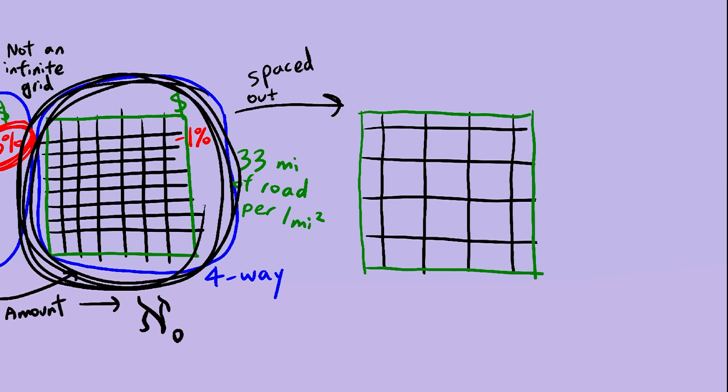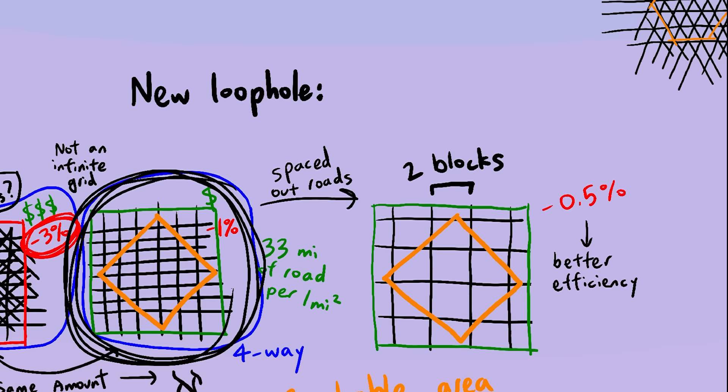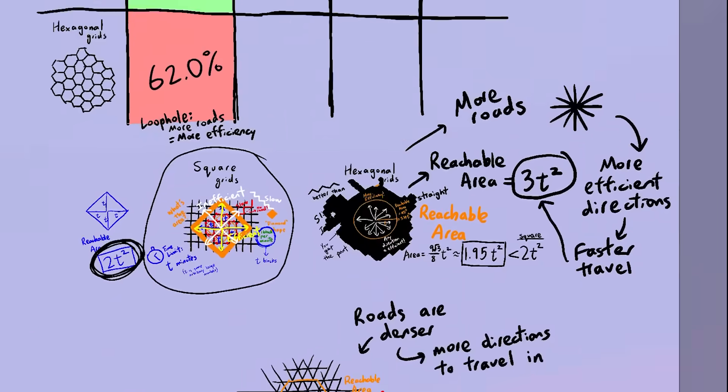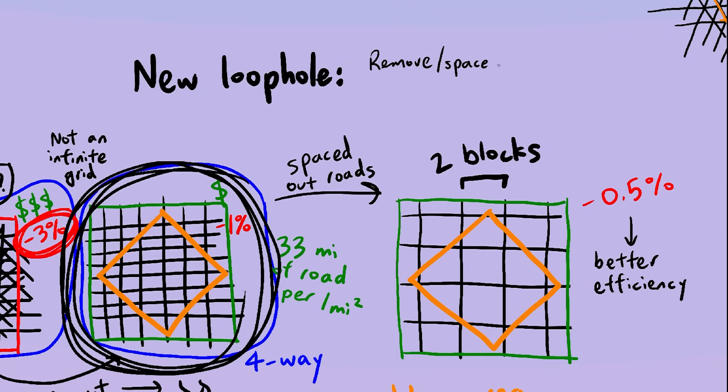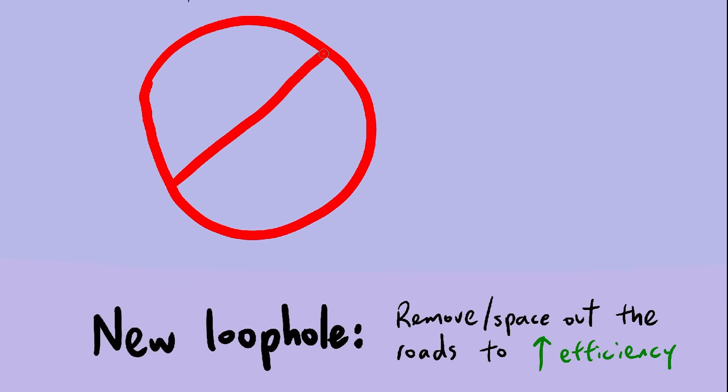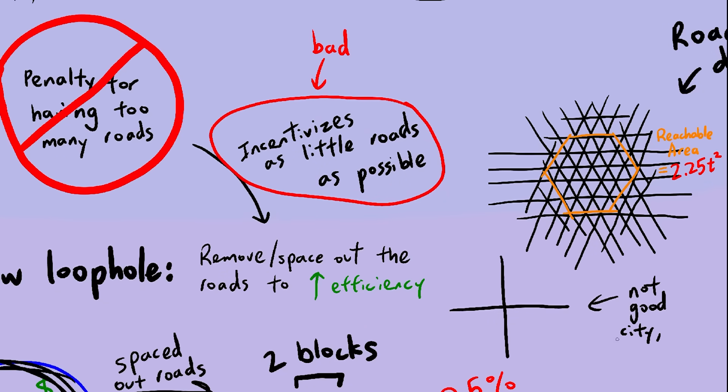Look at this. This new grid is just the old one, but more spaced out. And since it has less roads, its penalty will be smaller, the efficiency will have gone up. But we still have the same reachable area as before, because, well, it's a square grid. The reachable area is still the same shape as it used to be. Funnily enough, we now have the opposite problem as before. Instead of having a loophole where we add a bunch of roads to improve efficiency, we now have a loophole where we remove a bunch of roads to improve efficiency. So the lesson here is, we shouldn't have a penalty for having too many roads. It doesn't work, because it incentivizes removing all the roads, which is in general a bad idea. I don't think a city with two roads would work very well.